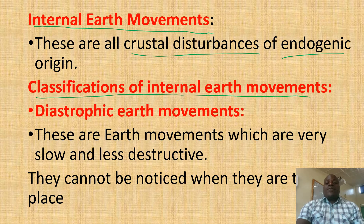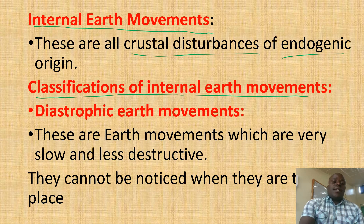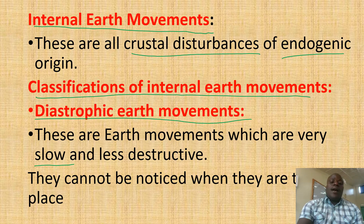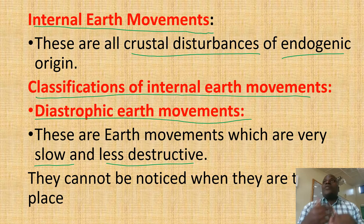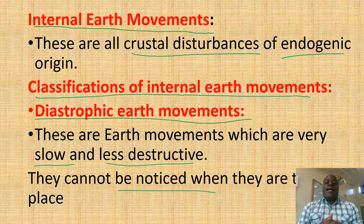Classifications of internal earth movements. There are two groups. One is diastrophic earth movements. These are earth movements which are very slow and less destructive. When they are occurring, they cannot be easily noticed and they occur slowly.